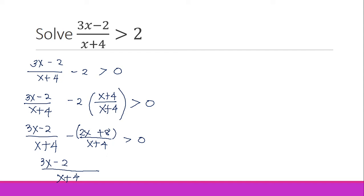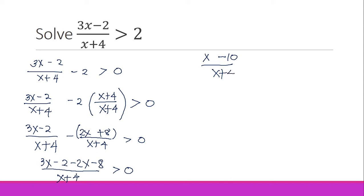Since we're subtracting, every sign in the second term changes: we get negative 2x and negative 8. Combining 3x and −2x gives x; combining −2 and −8 gives −10. So our expression simplifies to (x − 10)/(x + 4) > 0. We now have a single term on the left and zero on the right.